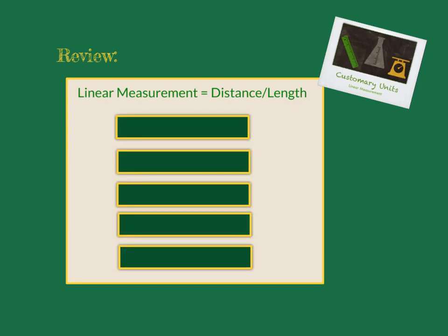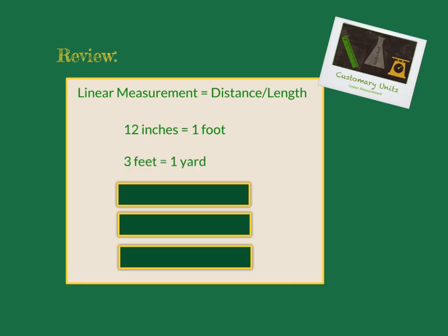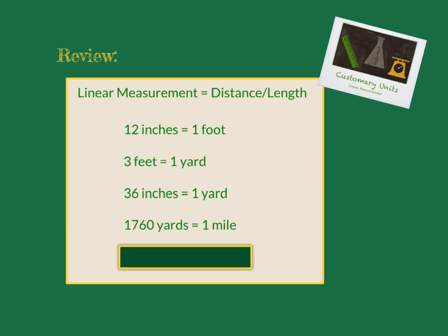In order to convert between units, we also need to know how the units relate to each other. There are 12 inches in each foot and 3 feet in each yard. Since there are 12 inches in each foot and 3 feet in each yard, you would need 36 inches to make one yard. The largest jump in units falls between yards and miles.